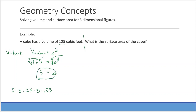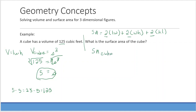Now that I know one side is 5, I want to find the surface area of the cube. The general formula for the surface area of a prism is 2 times length times width, plus 2 times width times height, plus 2 times height times length. Since all sides of a cube are equal and there are 6 sides, the surface area of a cube equals 6 times the side squared.